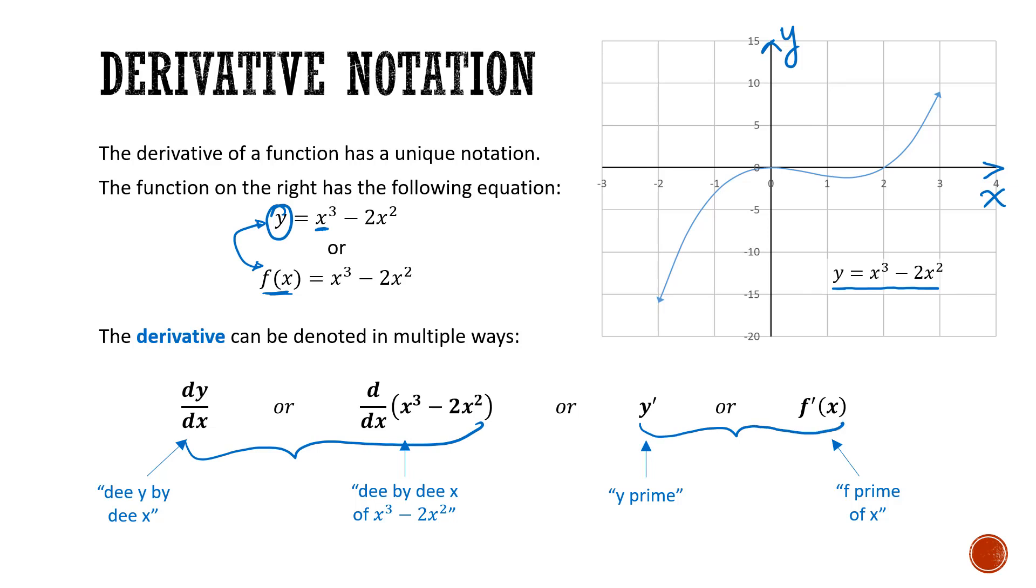And while it might be a little bit annoying that you have to deal with two different types of notation conventions, it is just the reality. What was happening historically is that there were two people coming up with the concept of the derivative at the same time. And they used two different types of notations.